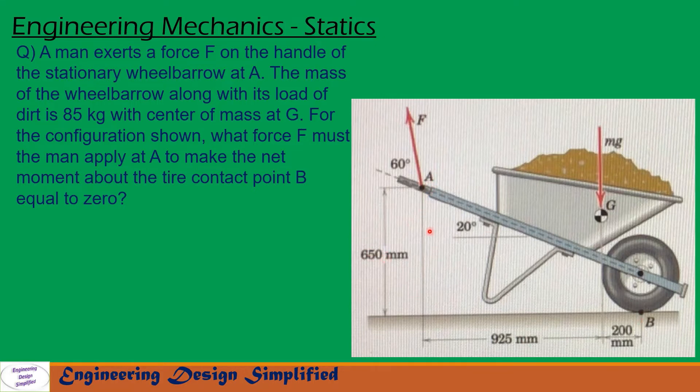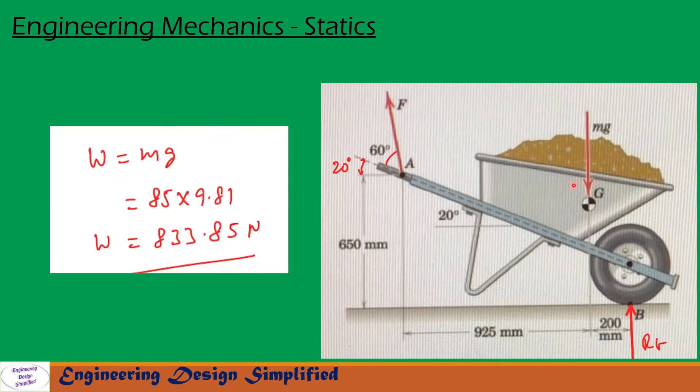In this problem, we need to find the amount of force F for the net moment due to this force and this load about point B is zero. Let us see in the coming slides how to solve this problem. Mass is given as 85 kg. So the weight due to mass 85 kg can be written as W = M × G. So 85 × 9.81. So weight equals 833.85 newtons.